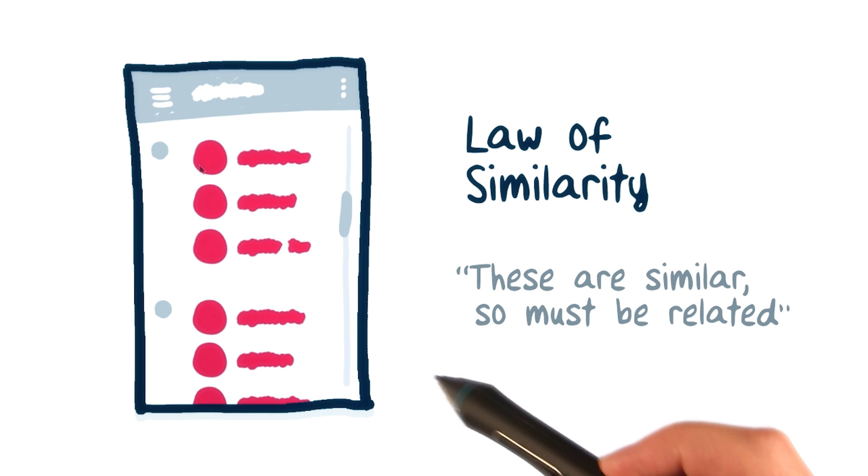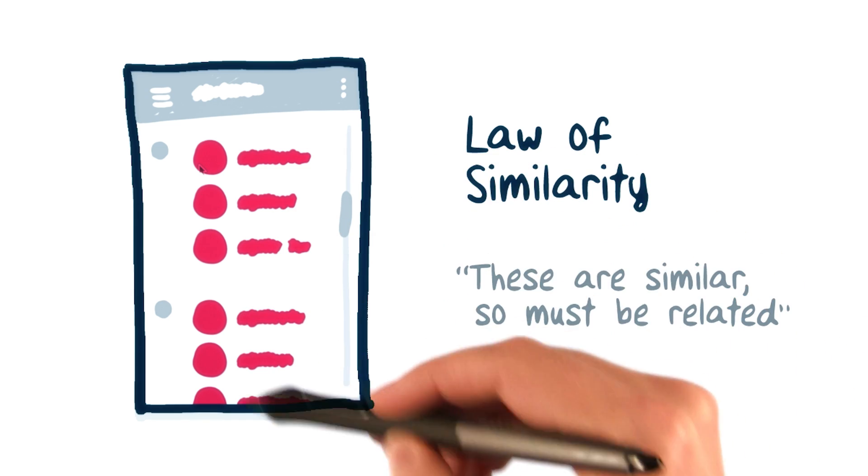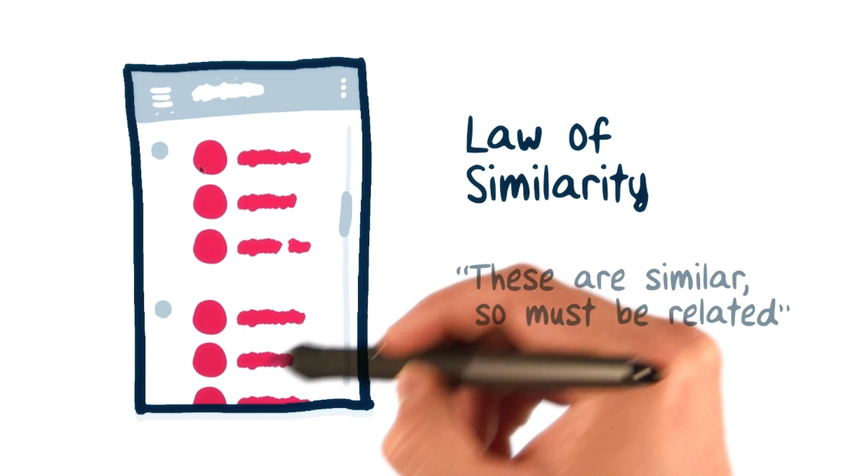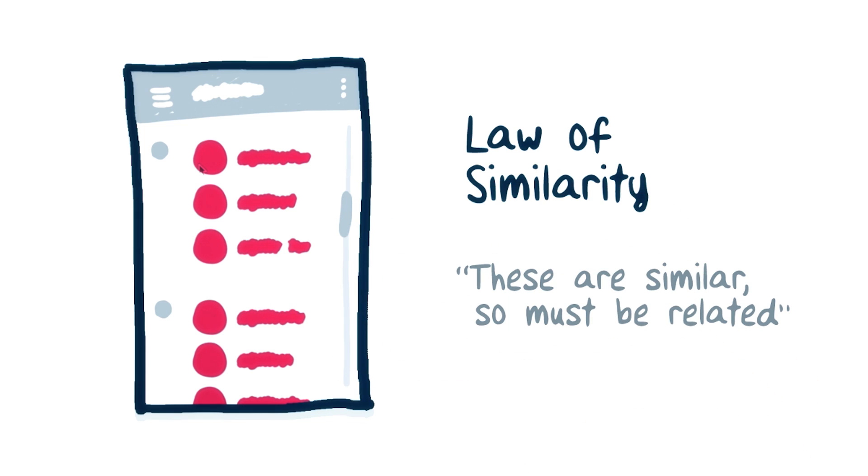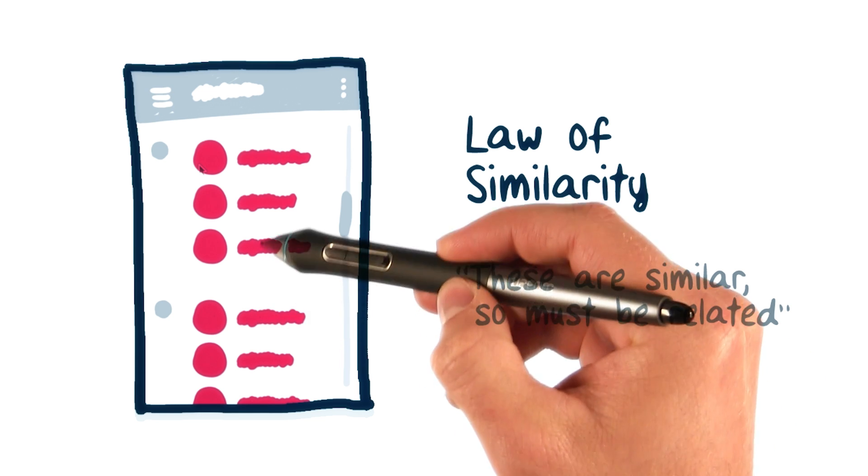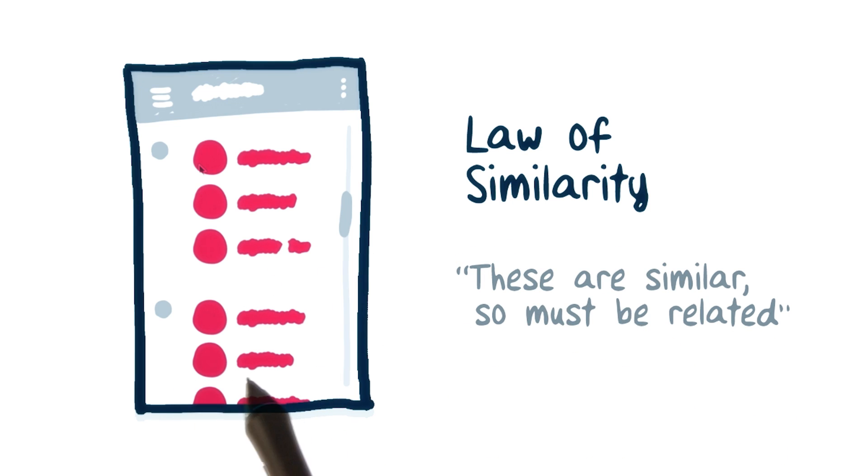Finally, we can take this a step further with the law of similarity and recognize that each of the items in this list must represent similar things, because they look basically the same. The cool thing is, all we did here to set up these relationships was use white space to our advantage. Adding more space between elements separated them both visually and conceptually. Tightening the space between elements helped them feel more related to one another.